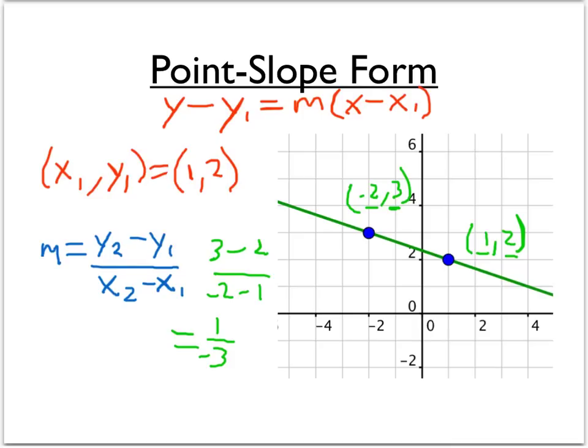And all that's left to do is to substitute the slope and the point into point-slope form. So once again, we have y minus y1, which we know is 2. So we'll fill that in. y minus 2 is equal to the slope, which we found to be negative 1 third, times the quantity x minus x1. x1 was 1. So we'll just plug in a 1. So we have y minus 2 is equal to negative 1 third times the quantity x minus 1.